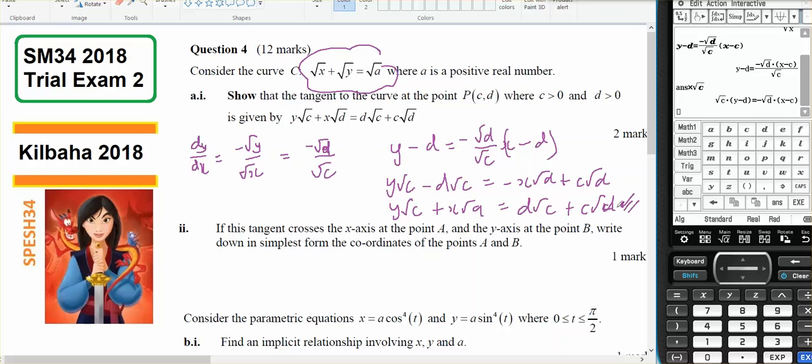If this tangent crosses the x-axis at point A and the y-axis at point B, write down the simplest form of coordinates of A and B. So A is where it crosses the x-axis, so that will be at 0, and B will be 0 and whatever.